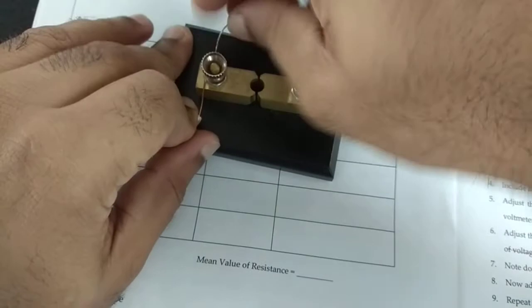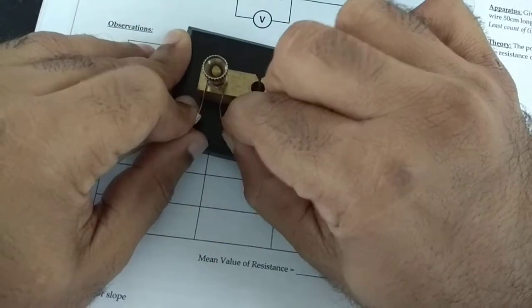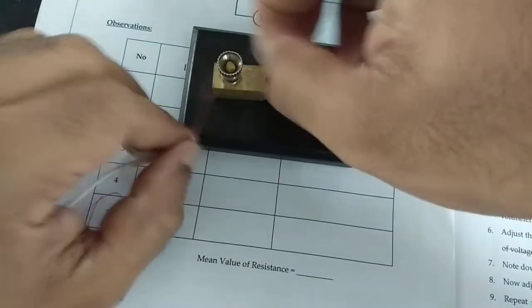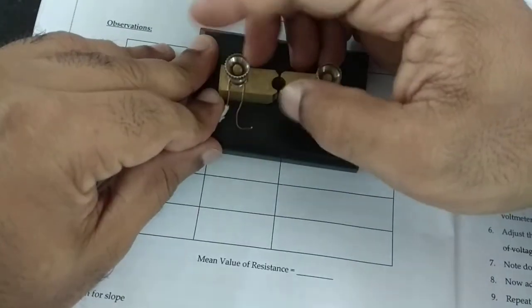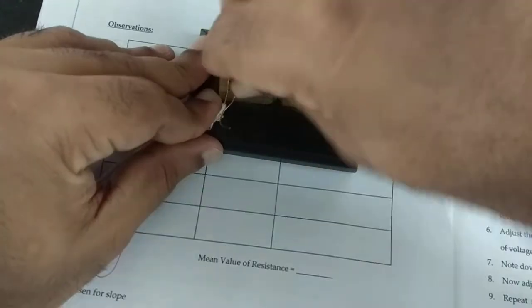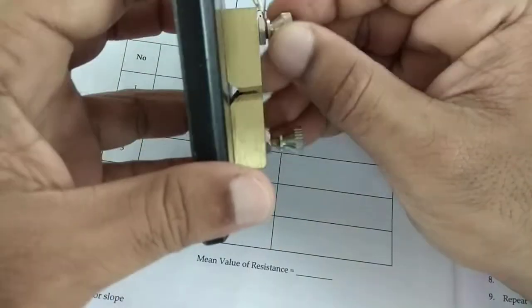Point number two, and I cannot stress this enough: when you are connecting this, you want to go from your left side to your right side in a clockwise direction. Why? Because you tighten it in the clockwise direction.